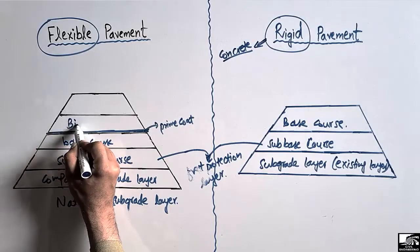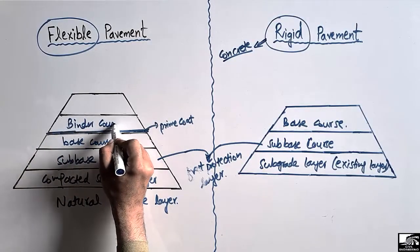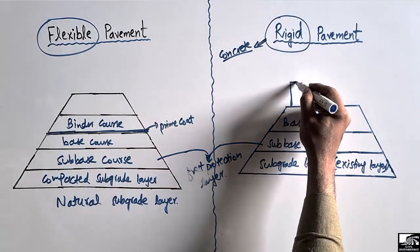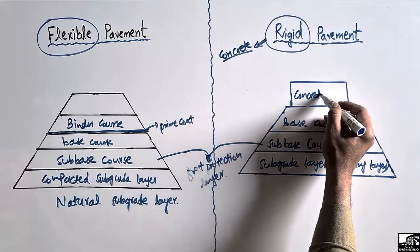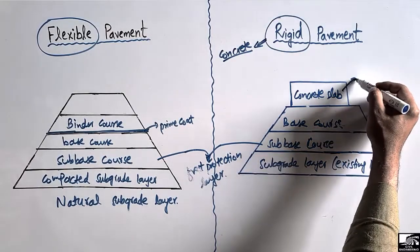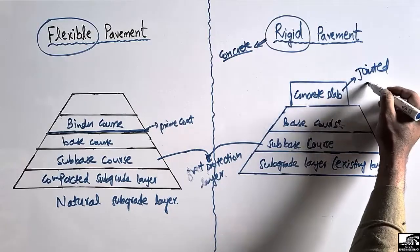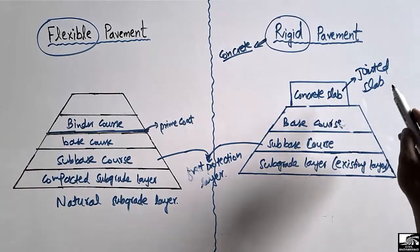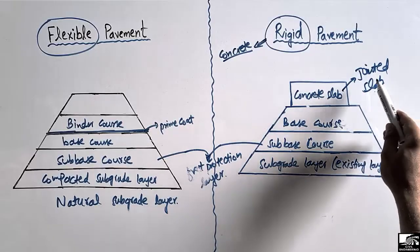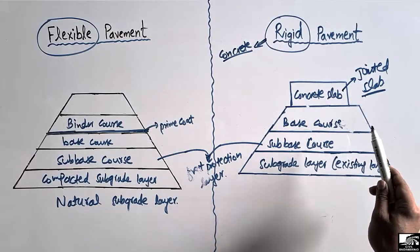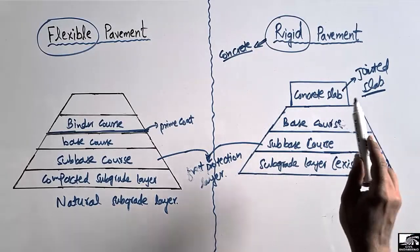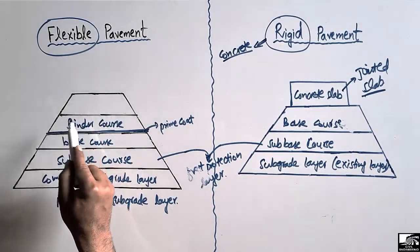On top of the base course in flexible pavement, we have another layer called the binder course. In the case of rigid pavement, on top of the base course we provide concrete slabs, which are jointed slabs. There are two types of joints: transverse joints and longitudinal joints. These joints are provided in the slab to resist the thermal stresses created due to temperature variation.